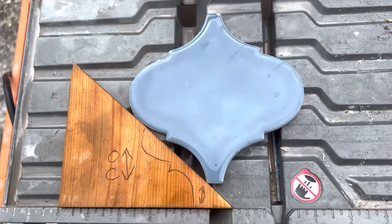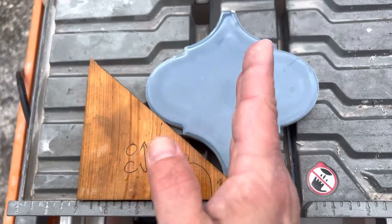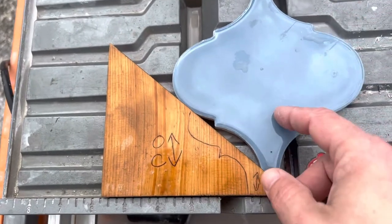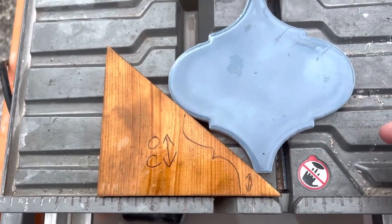Pop that up against it, and no matter where you need your vertical, you can move it back and forth. As long as it's pressed up against this block, you'll get a perfect vertical every time.